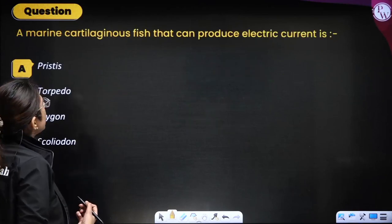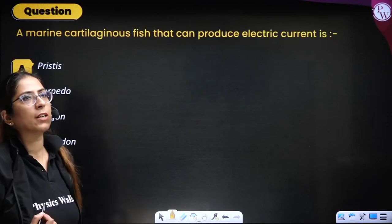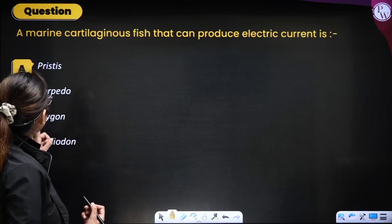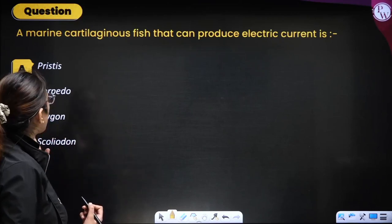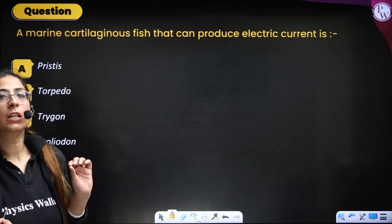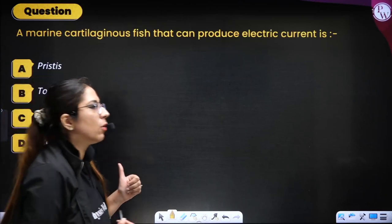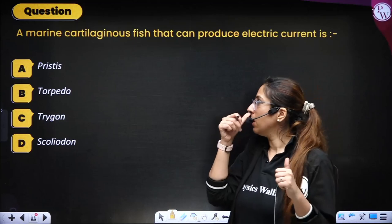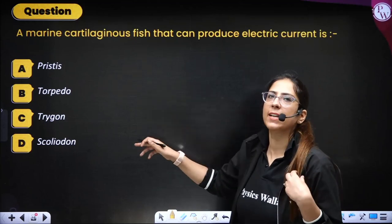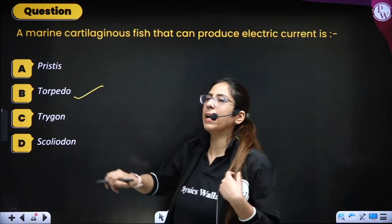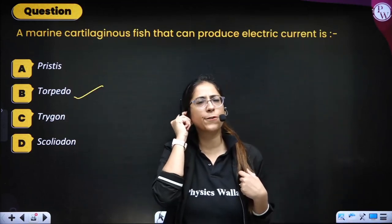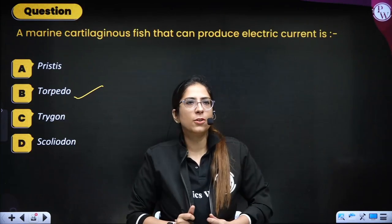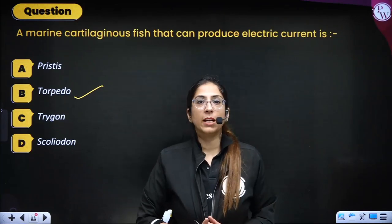A marine cartilaginous fish that can produce electric current — options are Pristis, Torpedo, Trigon, or Scoliodon. The correct answer is Torpedo. Torpedo produces electric currents and can give you a shock — do not go near these organisms.